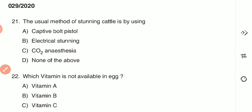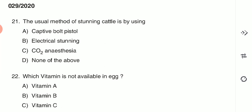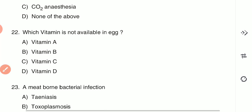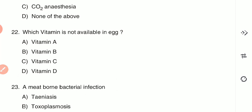Question 21: The usual method of stunning cattle is by using — (A) captive bolt pistol, (B) electrical stunning, (C) carbon dioxide anesthesia, or (D) none of the above. The captive bolt pistol is the method used for stunning cattle. Question 22: Which vitamin is not available in egg? (A) A, (B) B, (C) C, or (D) D. Vitamin C is not available in egg — option C is the correct answer.